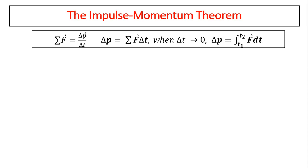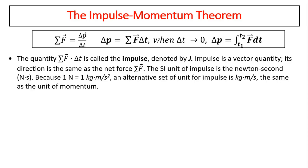Impulse-momentum theorem: since the sum of forces equals delta p over delta t, we can rearrange to get delta p equals the sum of forces times time. When delta t is very small, delta p equals the integral from t1 to t2 of F dt. The quantity — sum of force times delta t — is called the impulse, given the letter J. Impulse is a vector quantity, and its direction is the same as the net force.